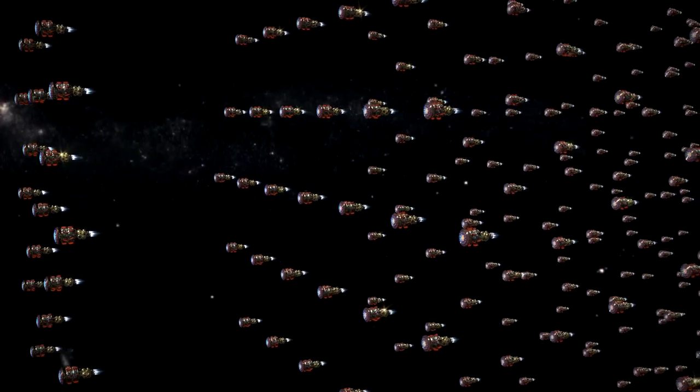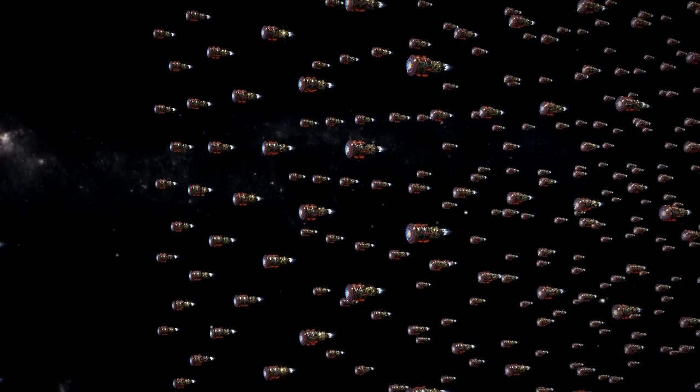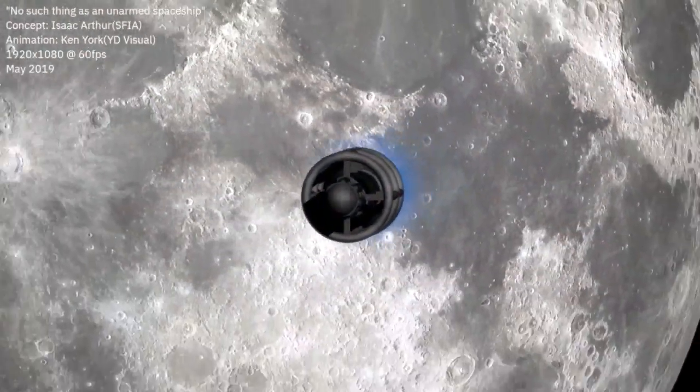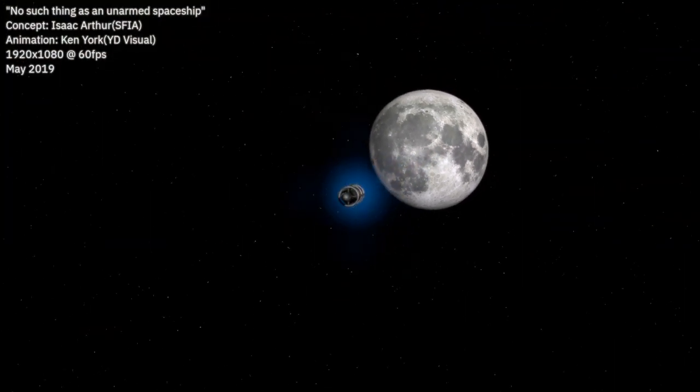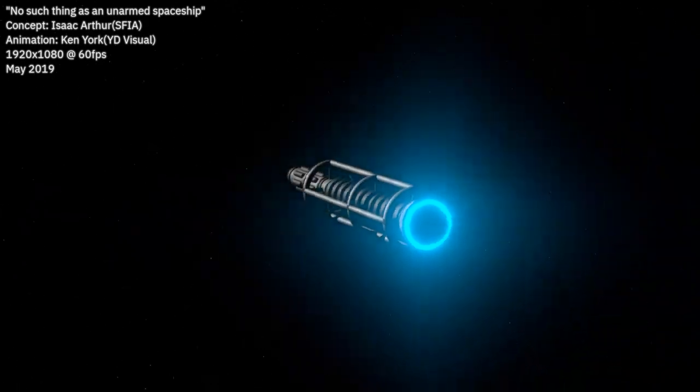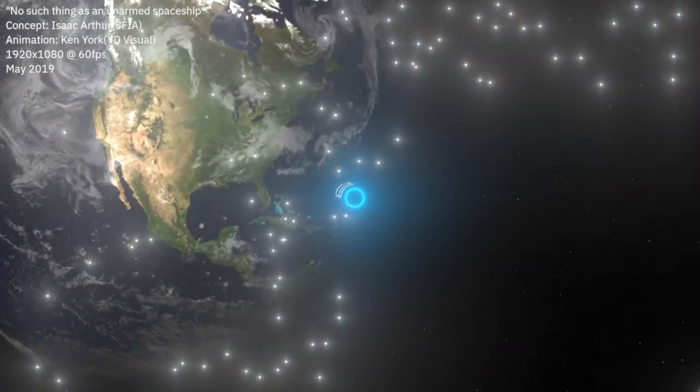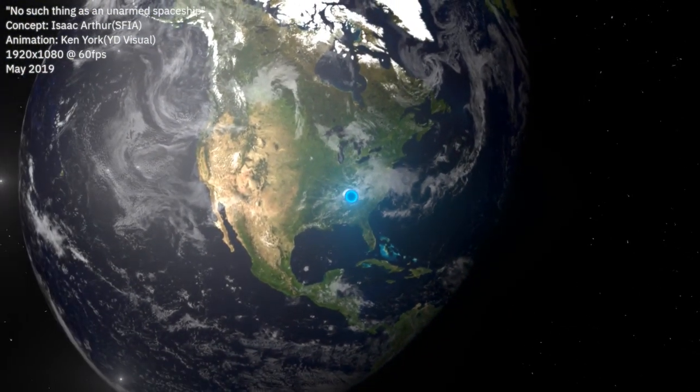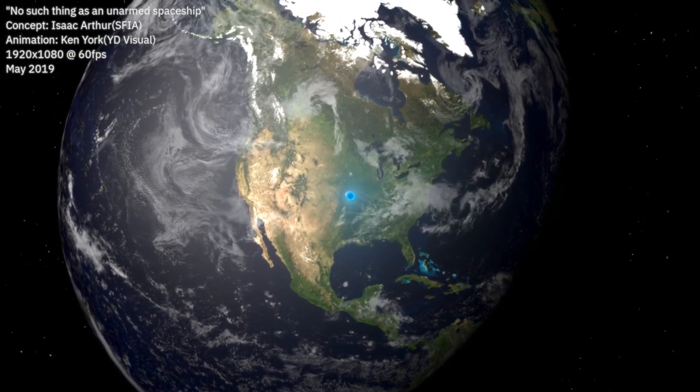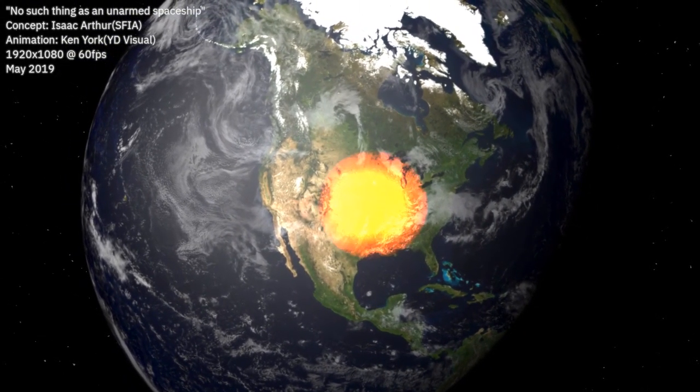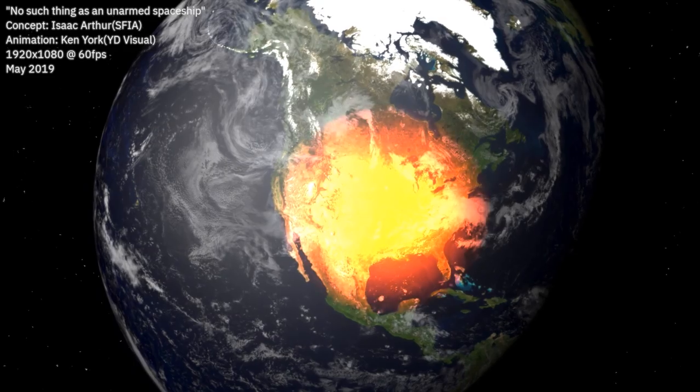As we often note here, there's no such thing as an unarmed spaceship, because the velocities and energies involved are so high you can devastate someone just by ramming your ship into them. A black hole ship rammed into a planet is still going to see the black hole part fly out the other side, but the big relativistic ship it used to be in is going to slam that planet more powerfully than if it was made out of atomic bombs.